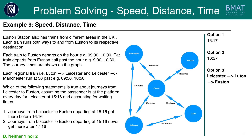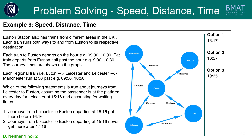There is also the third option: Leicester to Luton to Euston. Although this is not preferable, it's still one option — the question states journeys from Leicester to Euston never get there after 17.16. This train will start at 15.50 and reach Luton at 18.13 because it takes 123 minutes. It will then leave Luton at 19.00 and reach Euston at 19.35. This is far later than the 17.16 time, so looking at all three options, they don't fit any of the statements — therefore the correct answer is D.